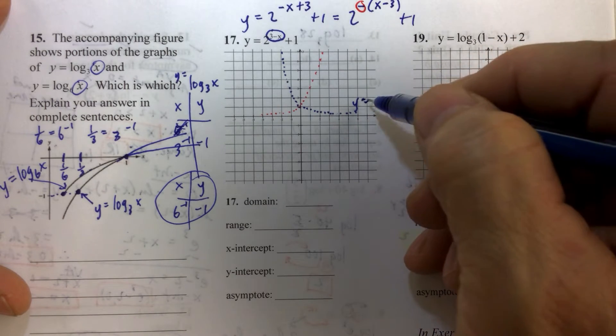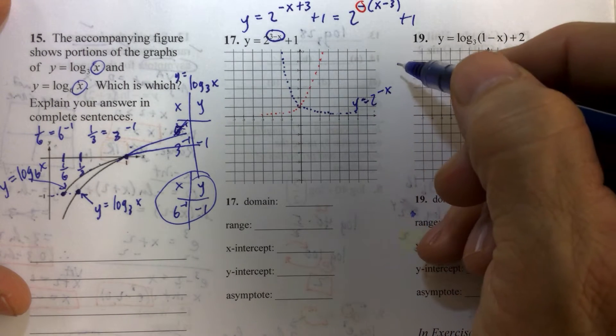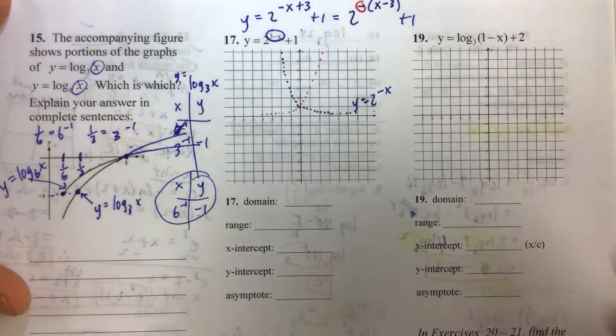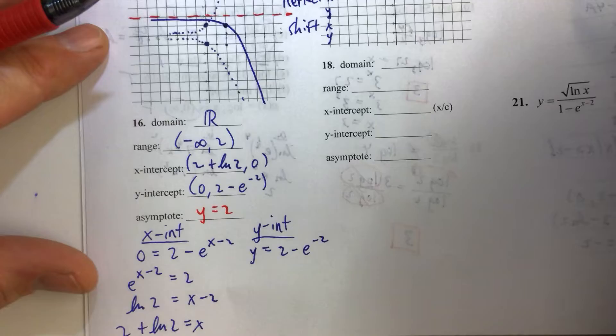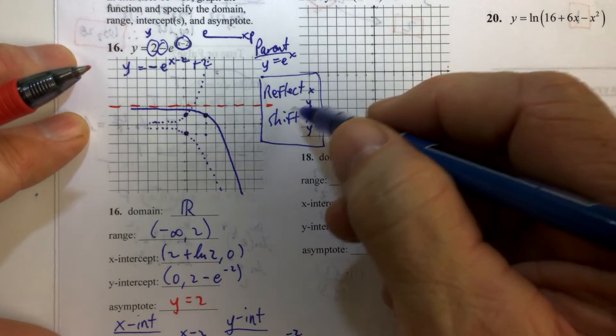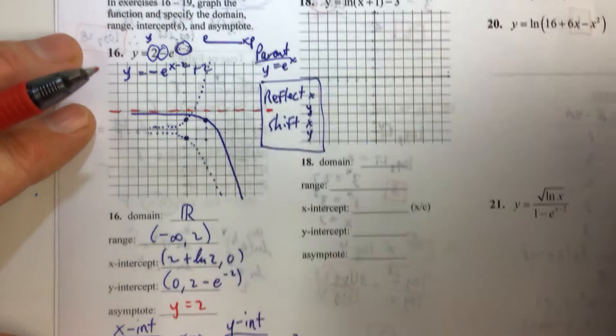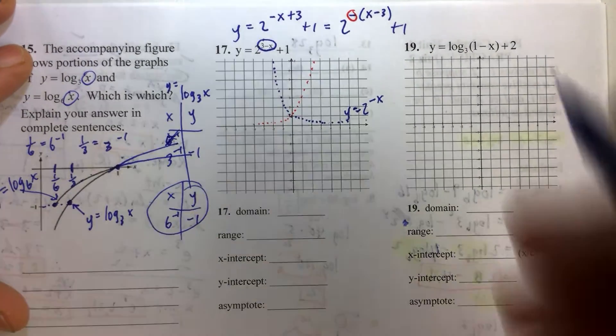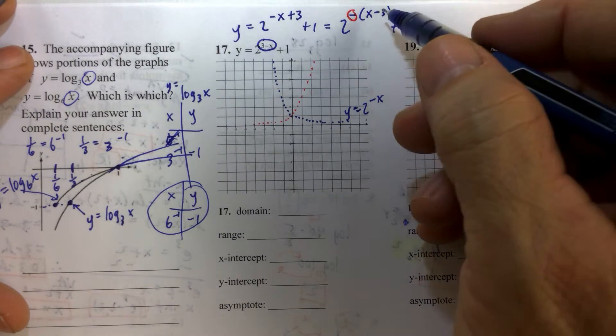Now we've done our reflection. Remember we reflect x, then we reflect y, then we shift in the x direction, then we shift in the y direction. So if you apply your transformations in that order, here's what it's going to look like.